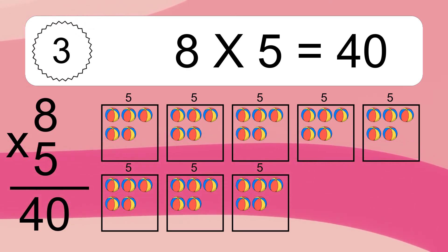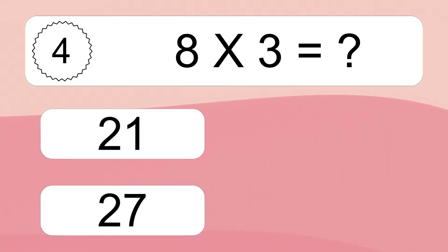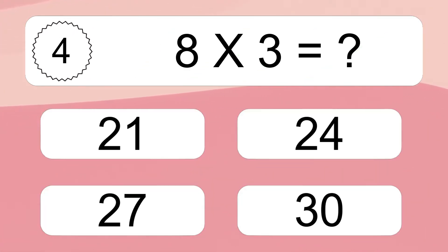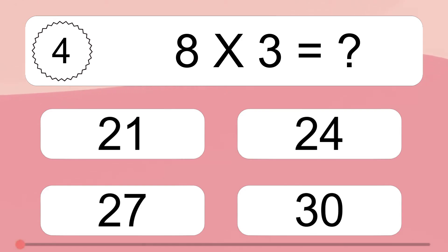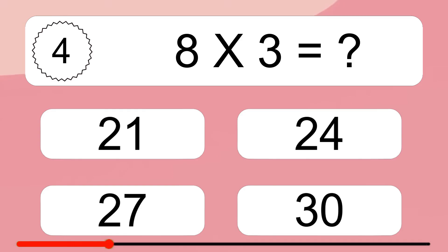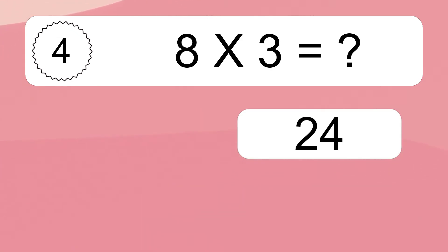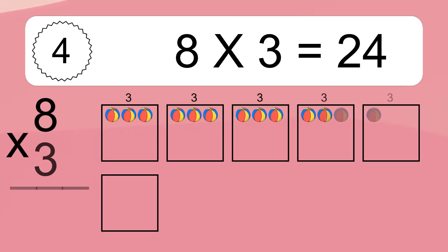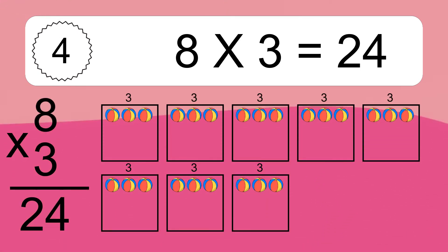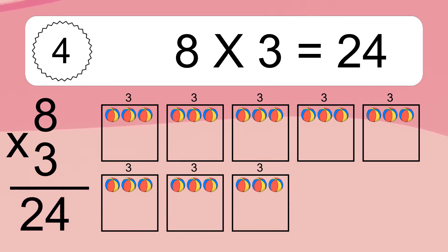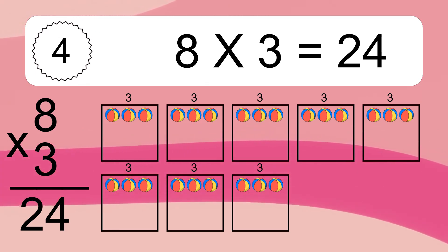This equals forty balls. Eight times three equals what? Eight times three equals twenty-four. We have eight boxes, and each box has three colorful balls inside. If you count all the balls in all the boxes together, you will have eight times three balls. This equals twenty-four balls.